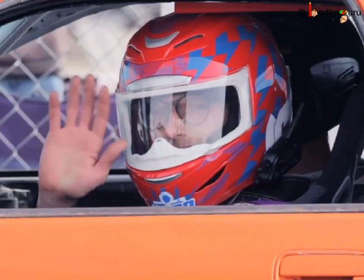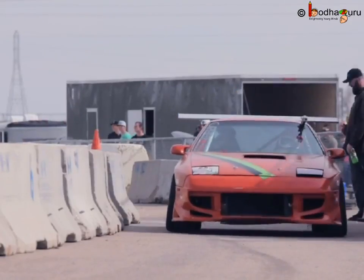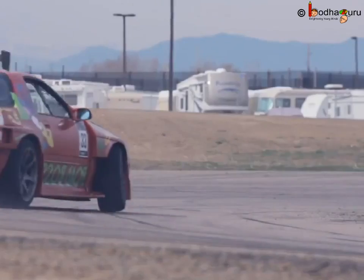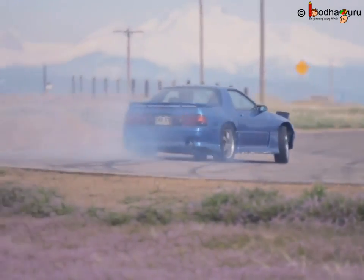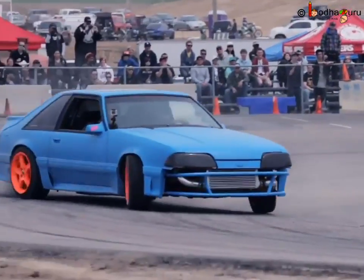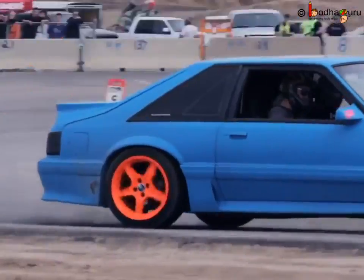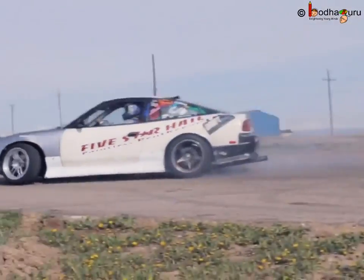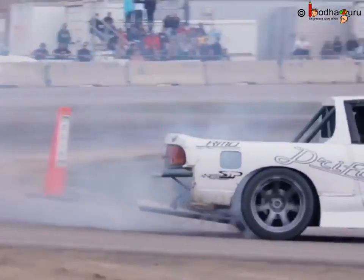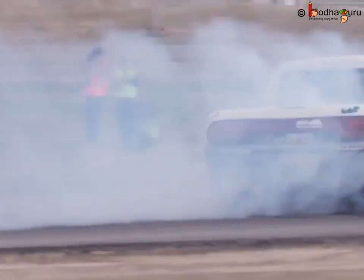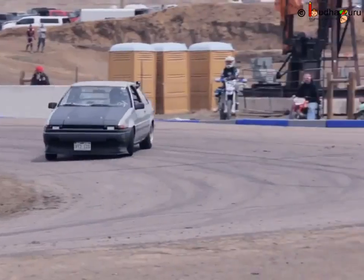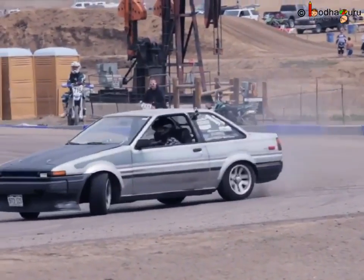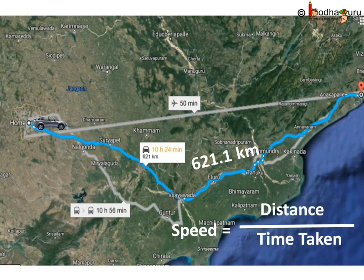Say a car is covering equal distance in equal intervals, but it is changing its direction. So its speed is the same but its velocity is changing. Velocity can be changed by changing the object's speed, direction of motion, or both.